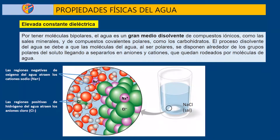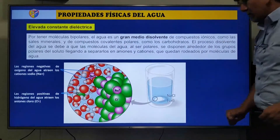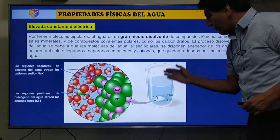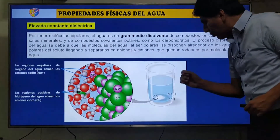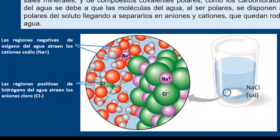¿Qué significa 'elevada'? Tenemos acá un esquema: un vaso con agua y un trozo de sal —cloruro de sodio— que tiene dos iones, el sodio y el cloro. Lo que va a pasar es que el agua va a terminar disolviendo esta sal.